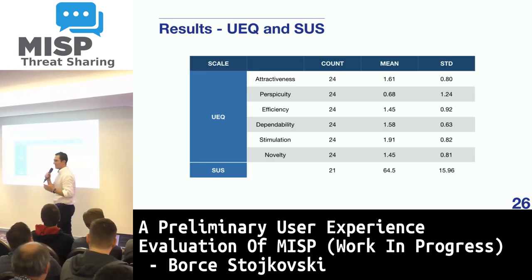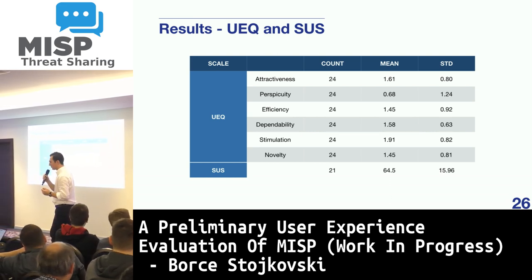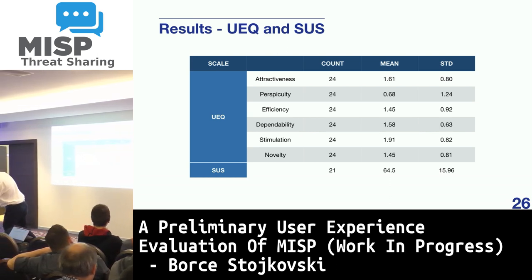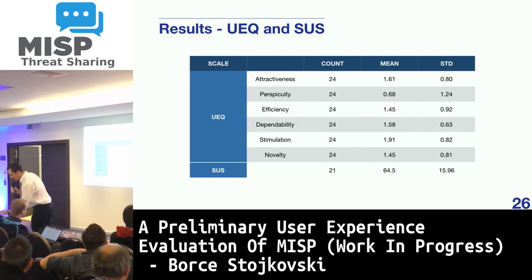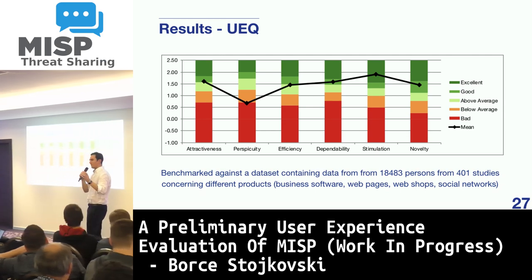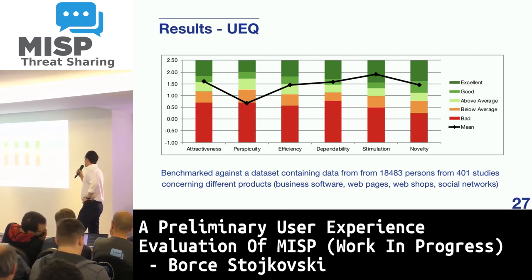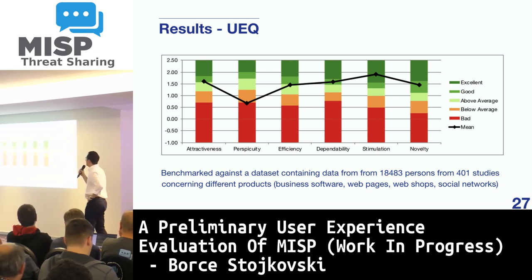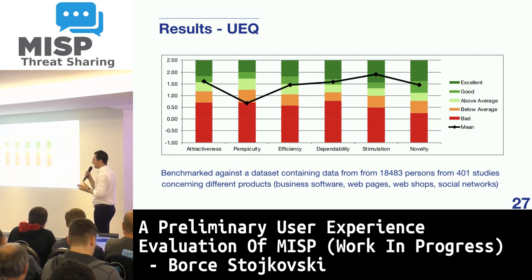These are the results of the questionnaires, which I will explain within a larger context. Starting with the User Experience Questionnaire, if we compare the means against benchmark values, we can see that the MISP platform is positively evaluated on all aspects except for Perspicuity — meaning users found it quite complex and difficult to use.